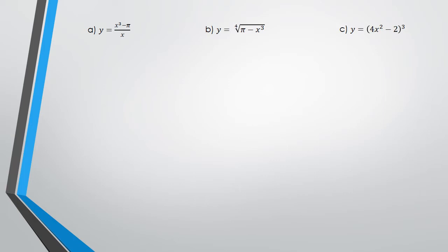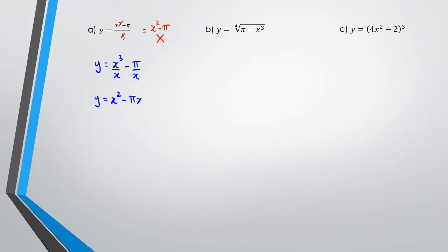For question (a), we've got y equals x cubed minus pi over x. The most common mistake people make is they cancel the x and x cubed and write this as x squared minus pi — if you do this you are completely incorrect. What you need to do is separate the x so that you have x cubed over x minus pi over x, and then we can write this as y equals x squared minus pi over x.